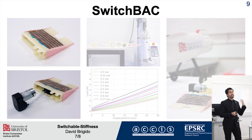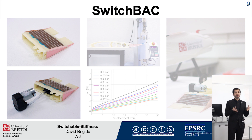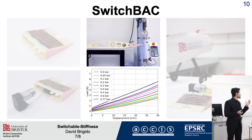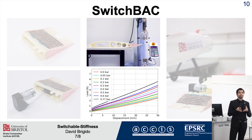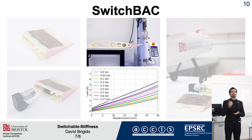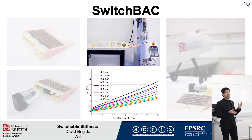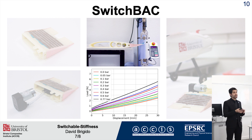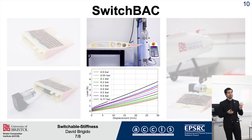In the left pictures you can see the switchback concept and how it is connected to a vacuum pump. In the middle pictures, we test this new device using a test frame machine for different loading conditions. The graph shows the load-displacement curves for different vacuum levels. As we increase the vacuum level, there is an increase of stiffness. For this specific device, we can switch the stiffness more than three times higher than its baseline.